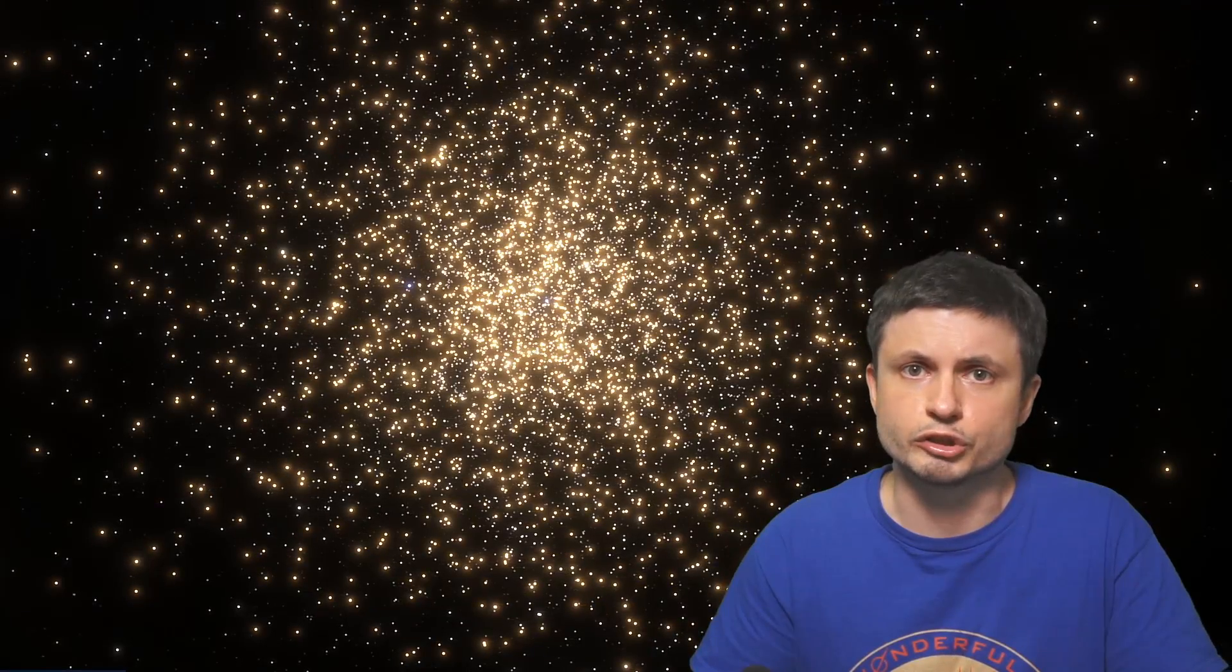First of all, our galaxy has roughly around 150 different globular clusters around it. Without exception, all of these clusters are extremely old, usually at least 10 billion years old, meaning that many of them were produced when the galaxy was just being created.